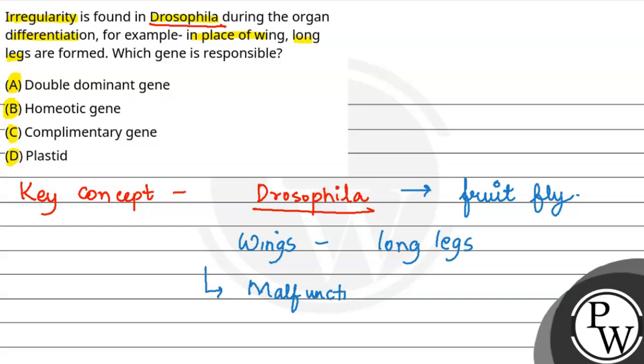this malfunction is due to the malfunction of specific regulatory genes which control the development of body parts. So we explore and identify which gene type is responsible for this type of developmental abnormality.